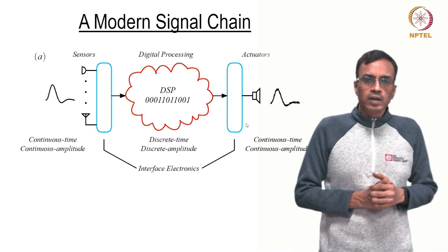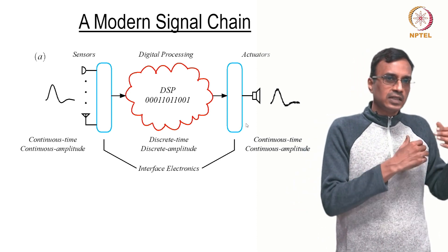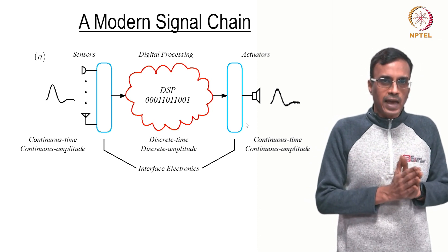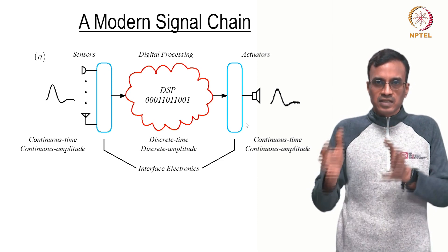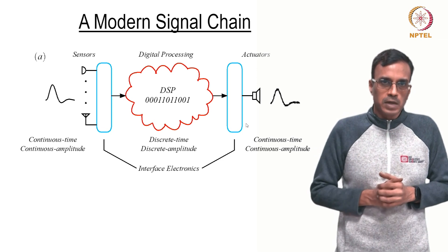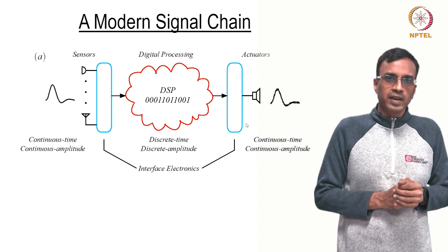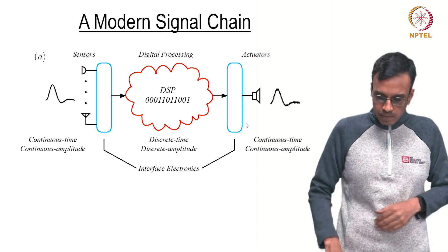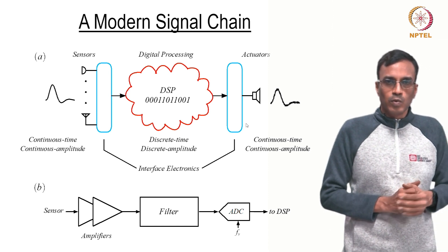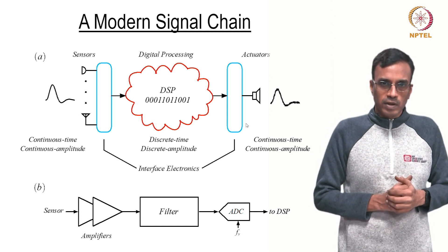Yet another case in point is the block diagram of any modern signal chain. The signal chain senses signals that are continuous in time and amplitude — the so-called analog signals — and digitizes them so that the digital signal can be processed by a DSP. To convert a continuous time and amplitude signal into a discrete time and discrete level signal, there is what is called the interface or the signal conditioning electronics, which consists of filters, amplifiers, and data converters.